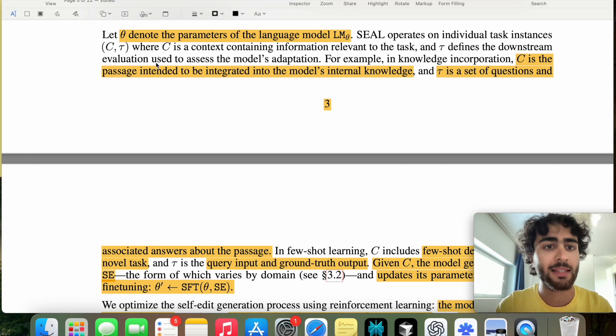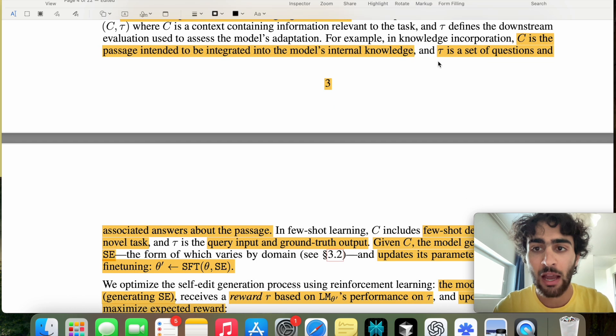So in knowledge incorporation, C is the passage intended to be integrated into the model. This internal knowledge is why it's called knowledge incorporation. We want to integrate, incorporate this knowledge into the model's weights. And then tau is a set of questions to see whether or not the model has incorporated this.